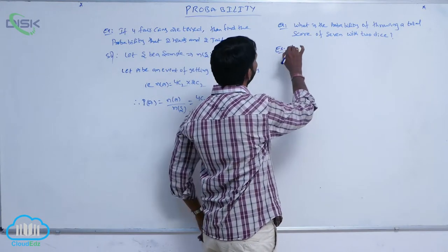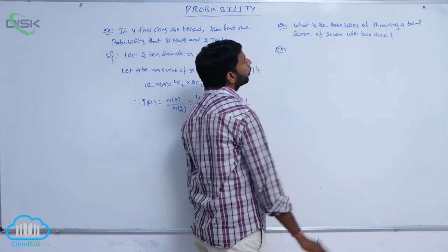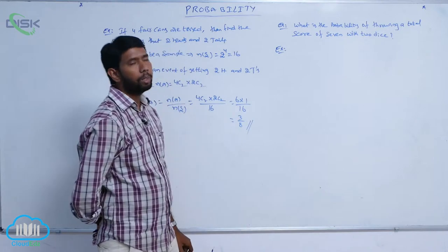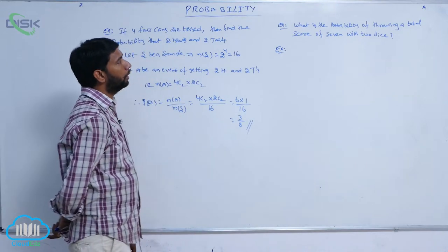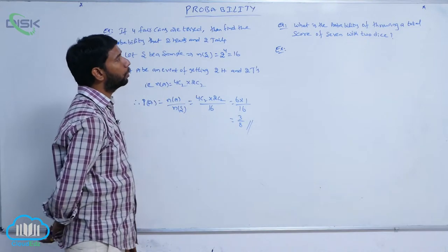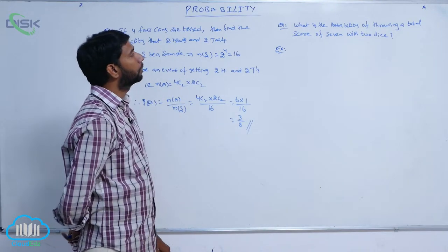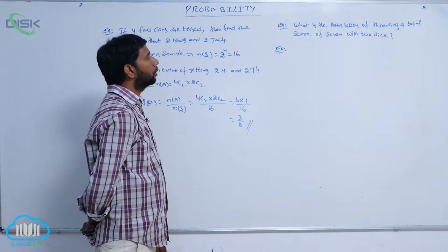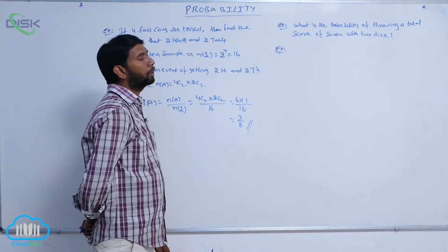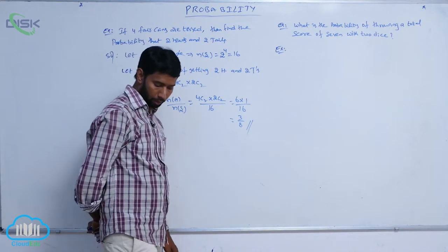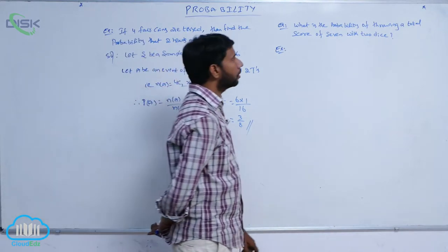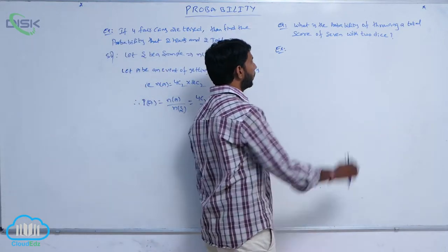What is the probability of throwing a total score of seven with two dice?